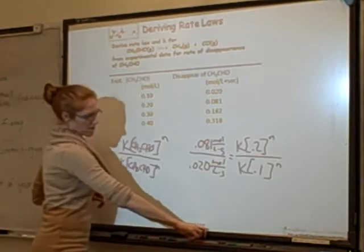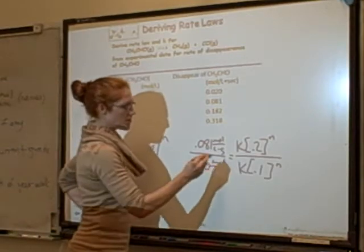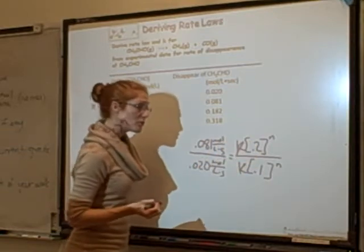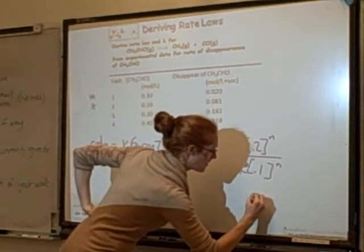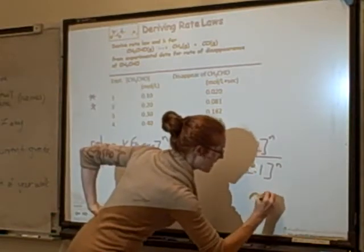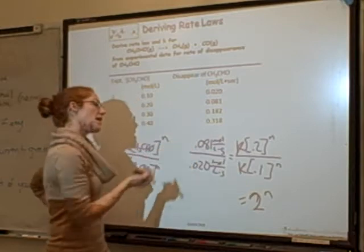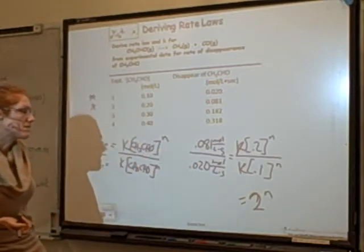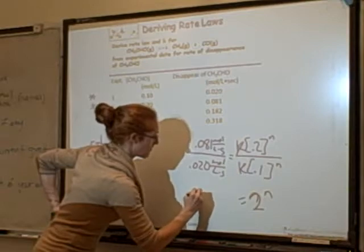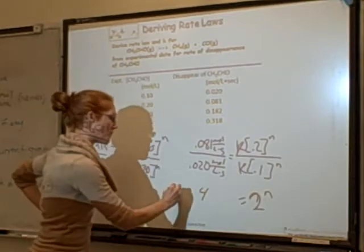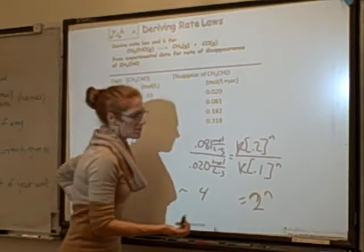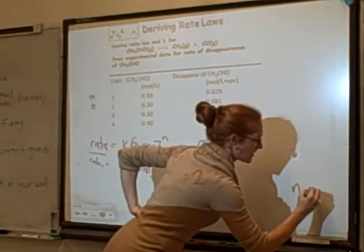Now I can start canceling things out. k divided by k — that's gone. 0.2 divided by 0.1 gives 2 to the power of n. So 2 to the power of n equals 0.081 divided by 0.020, which is pretty much 4. So 2 to the power of n equals 4, meaning n has to equal 2.